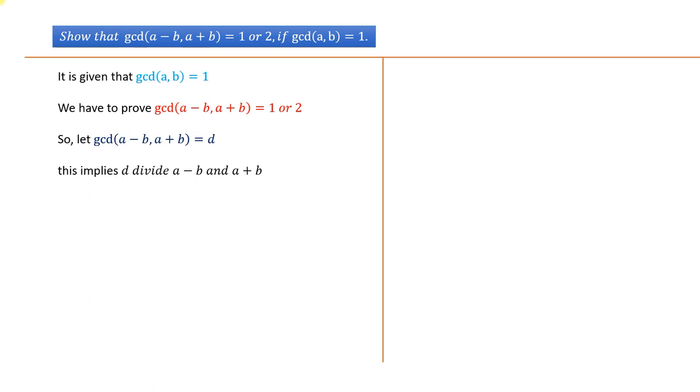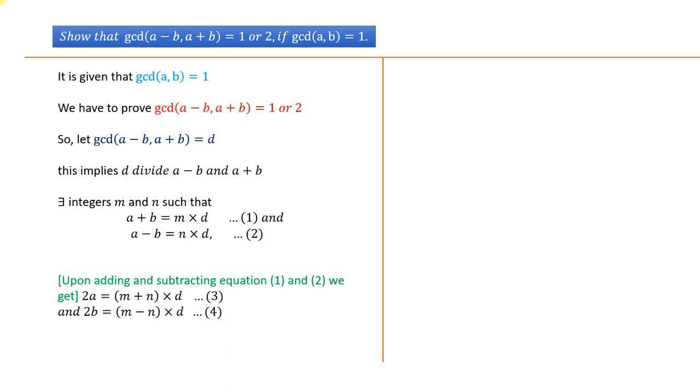Upon adding and subtracting equation (1) and (2), we get 2a = (m + n) × d, which is equation (3), and 2b = (m - n) × d, which is equation (4).